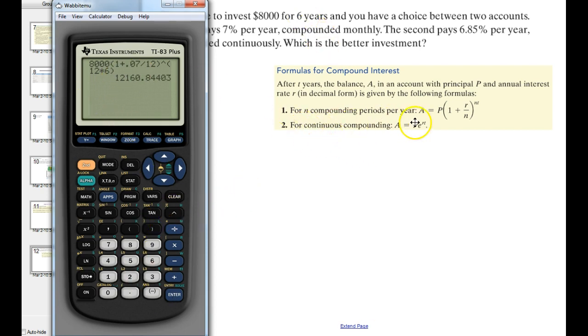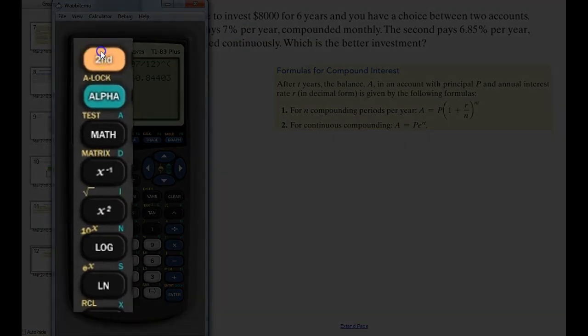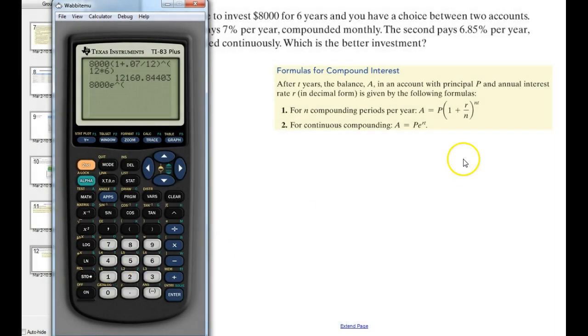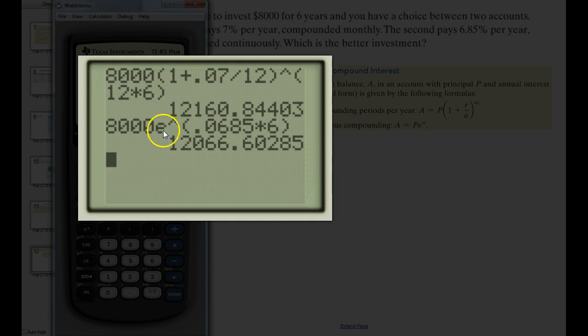And then for the second one, we just do P, which is 8,000 again, times E to the RT, so second LN for E. R for here is 6.85%, so I'm going to write that 0.0685. You always write it as a decimal. Times six. All right, and then there's our second account, so the one that pays monthly gives us more than the one that is continuous compounding. So even though it's compounding all the time, it still can't come up with enough for that difference, for this one being a higher nominal percent.